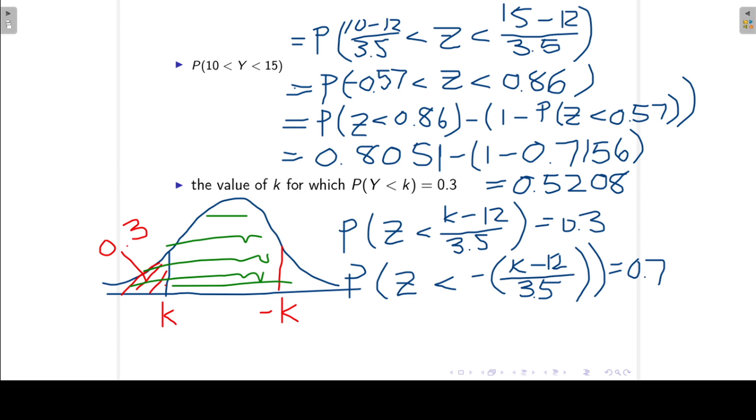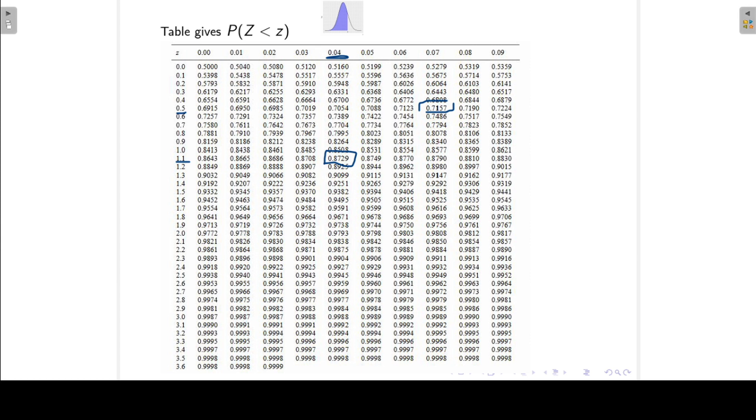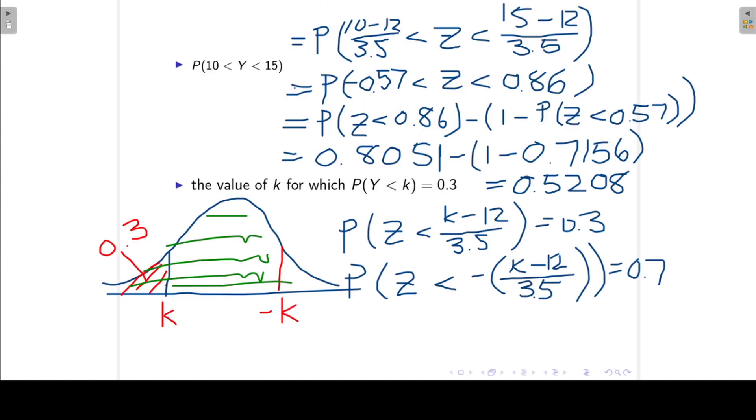And now we can go back to our tables. We want to look up a probability of 0.7. So if we look here, 0.7 will fall more or less there. So we can take the average of 0.52 and 0.53. So we can say that this is equal to 0.525. And from this we can solve for k, and that will give us k equals 10.1625.